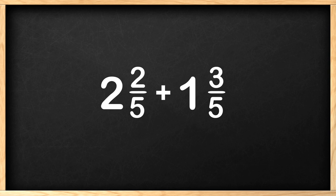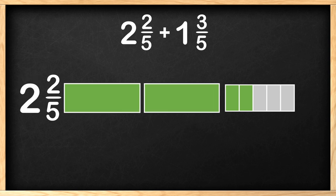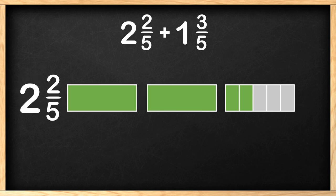A mixed number is comprised of a whole number and a fractional number. Let's take a look at 2 and 2 fifths. The 2 means we have 2 whole units. This is the whole number. The 2 fifths means we have part of a whole. This is the fraction. In the fraction 2 fifths, we have 2 parts of a whole that is split into 5 equal pieces.